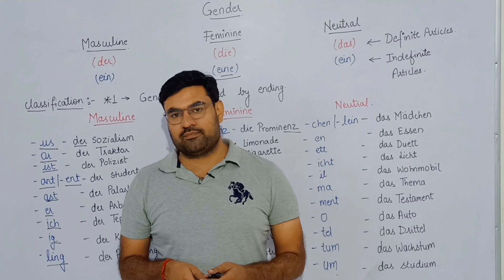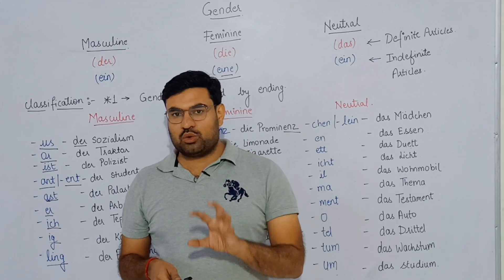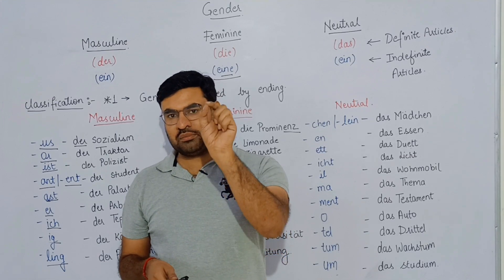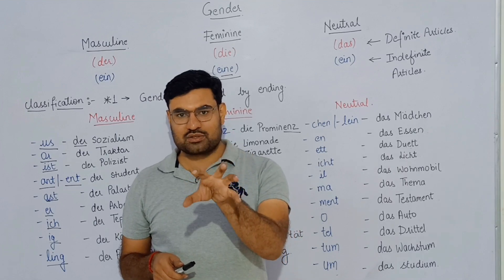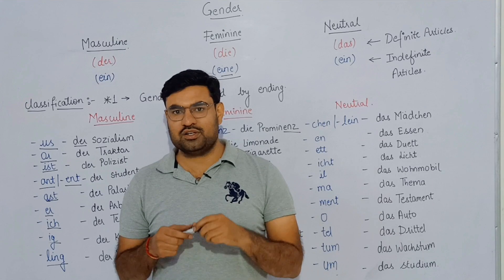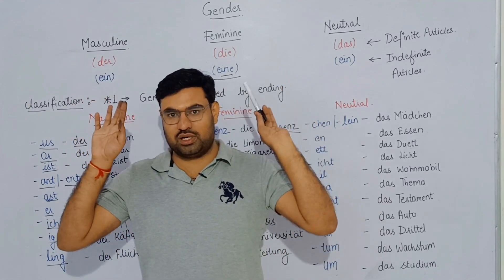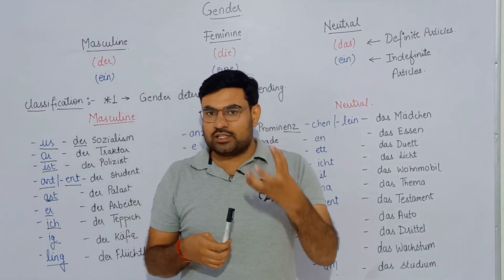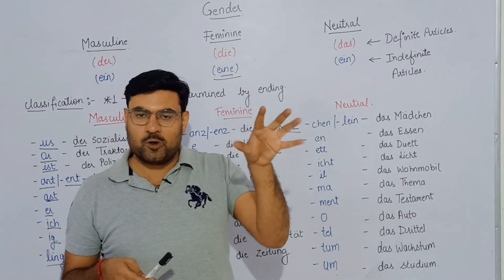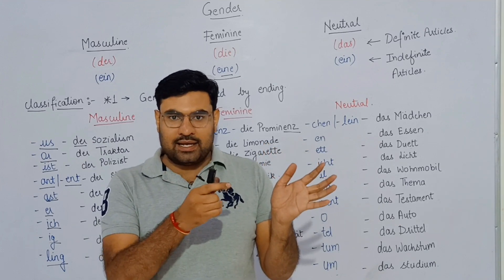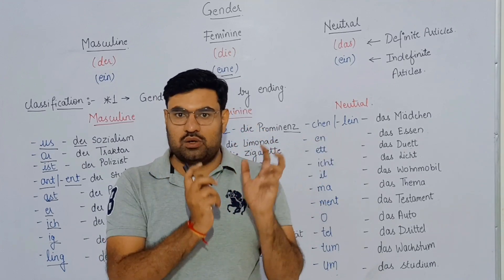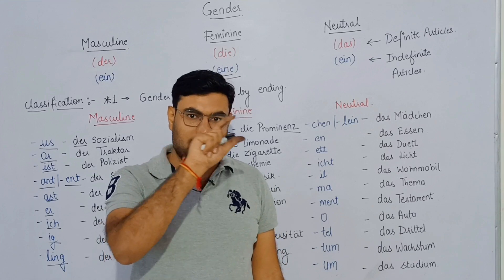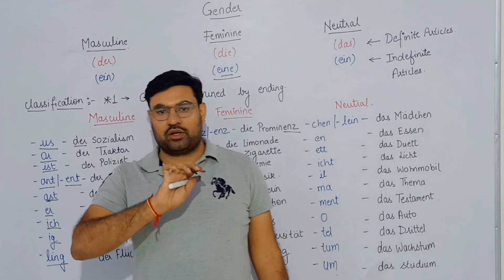Now, if a particular thing is in front of you, how will you determine whether that noun has a masculine, feminine, or neutral gender? It is not written on the object itself. There is a way to determine it: we add an article in front of the noun, and that particular article determines the gender of the noun.